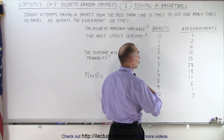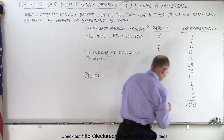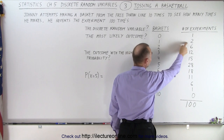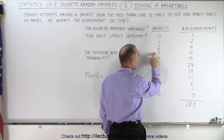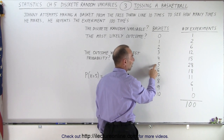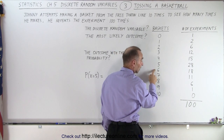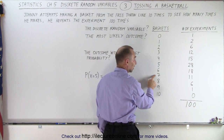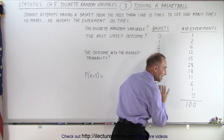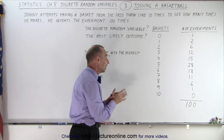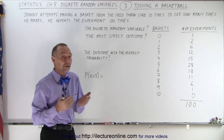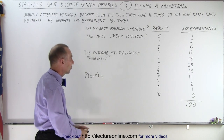Out of 100 total experiments: he scores 0 baskets out of 10 attempts once; 1 basket twice; 2 baskets 6 times; 3 baskets 12 times; 4 baskets 15 times; 5 baskets 28 times; 6 baskets 18 times; 7 baskets 11 times; 8 baskets 6 times; 9 baskets once; and never did he manage to make all 10 baskets — so 0 times for 10 baskets. All of these add up to 100 attempts.